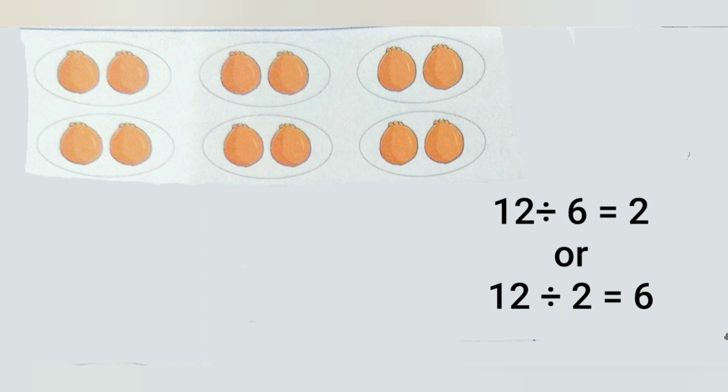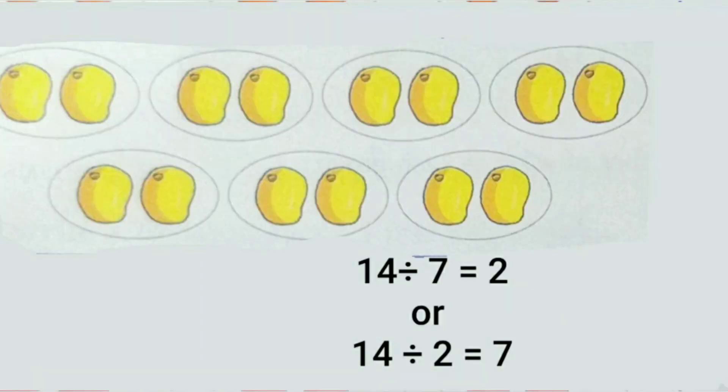Same way we can do next example. Here total we have 14 mangoes and 7 groups. So number of mangoes in each group is 2. So we can write 14 divided by 2 equals 7, or 14 divided by 7 equals 2.